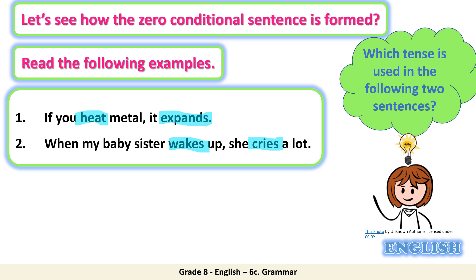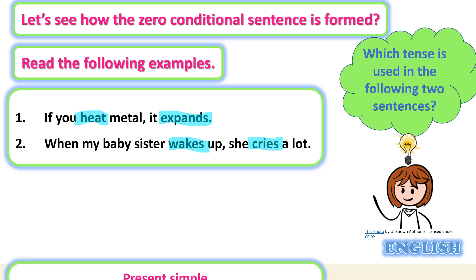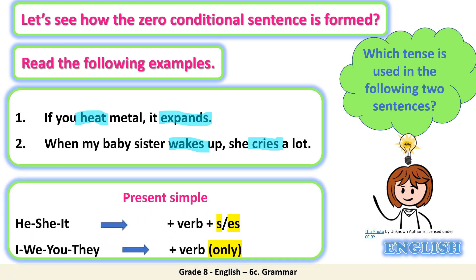Let's remember together how we form the present simple tense. If we have he, she, or it, we add -s or -es to the verb. If we have I, we, you, or they, we just put the verb as it is — in the base form. We do not add anything.